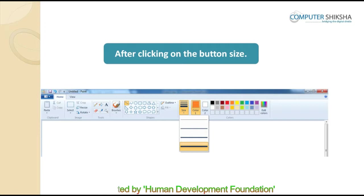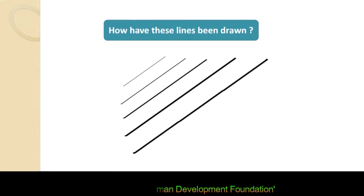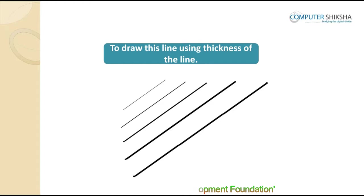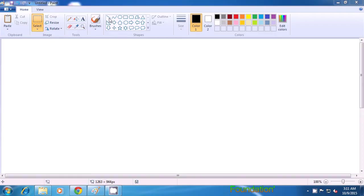Depending on our requirements, we select the line size and then with the help of the line tool, draw our required line. With the help of the line tool today, you will make the first drawing of this class. In this picture, you can see that four different kinds of lines have been drawn. To draw these four lines, we will first select the line tool and then go to the Size option, using the line tool and the thickness of the line option.